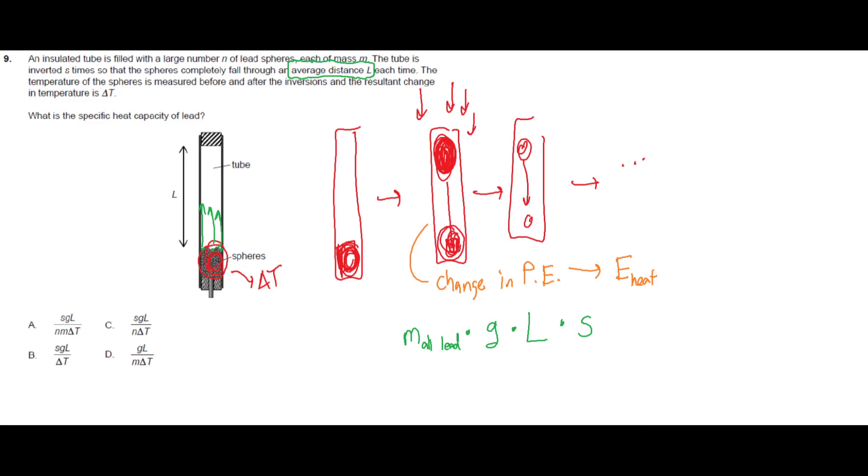And next, the heat energy. So the heat energy is created for all of the leads, all of the leads, times by the specific heat of the lead, times by the change in temperature, which is given by delta T.